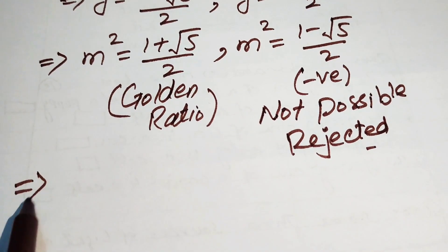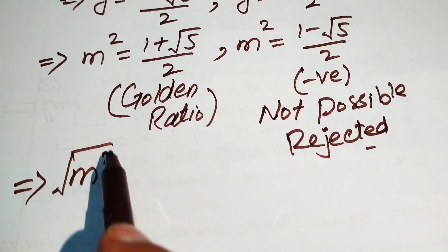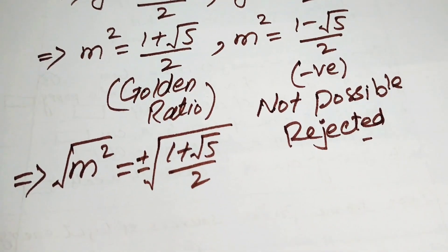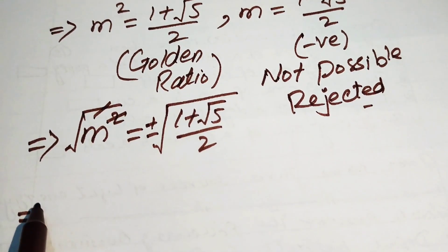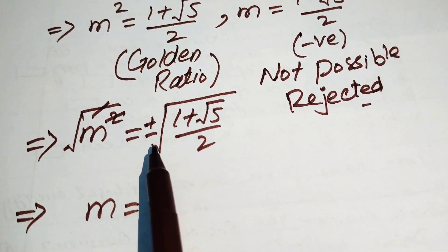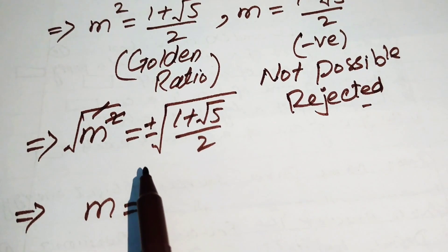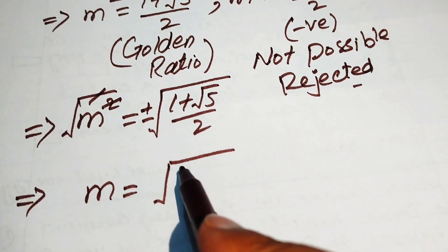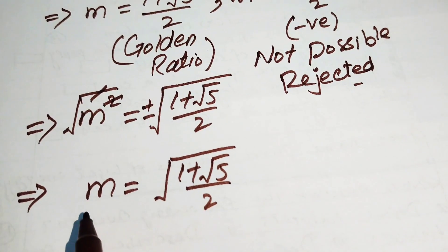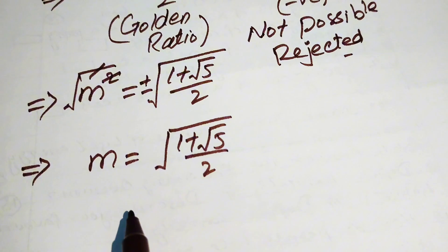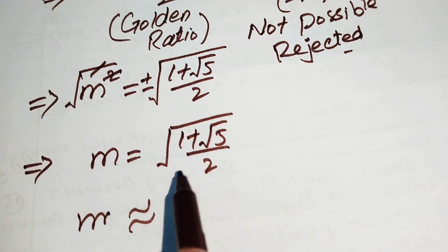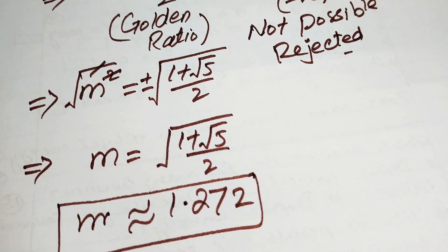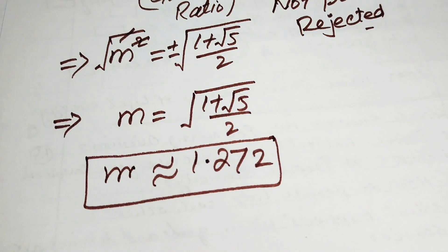To find m, we take the square root of both sides: m equals √((1 + √5)/2). We choose the positive value since m is a side length of a triangle. The approximate value of this expression is 1.272. This is the final value of m. Thank you for watching — please subscribe for more exciting videos.